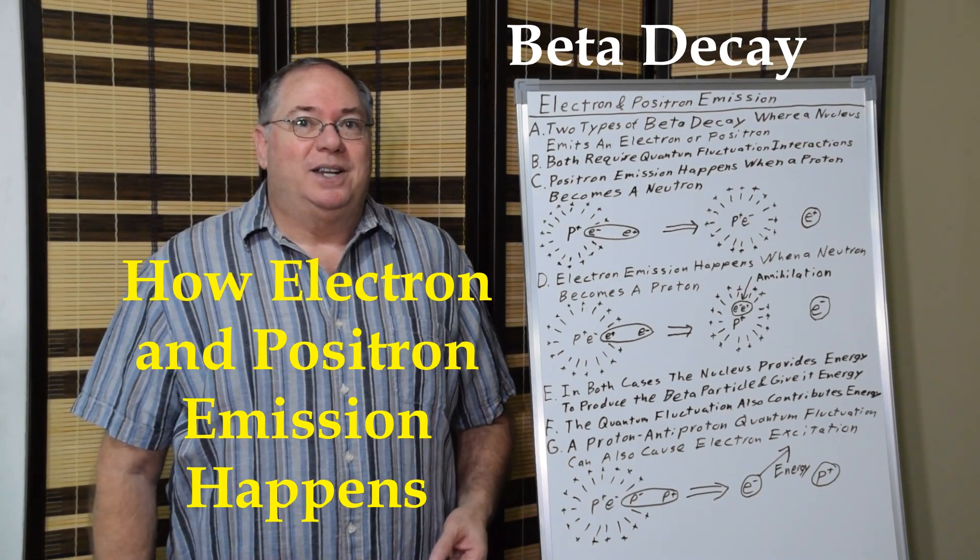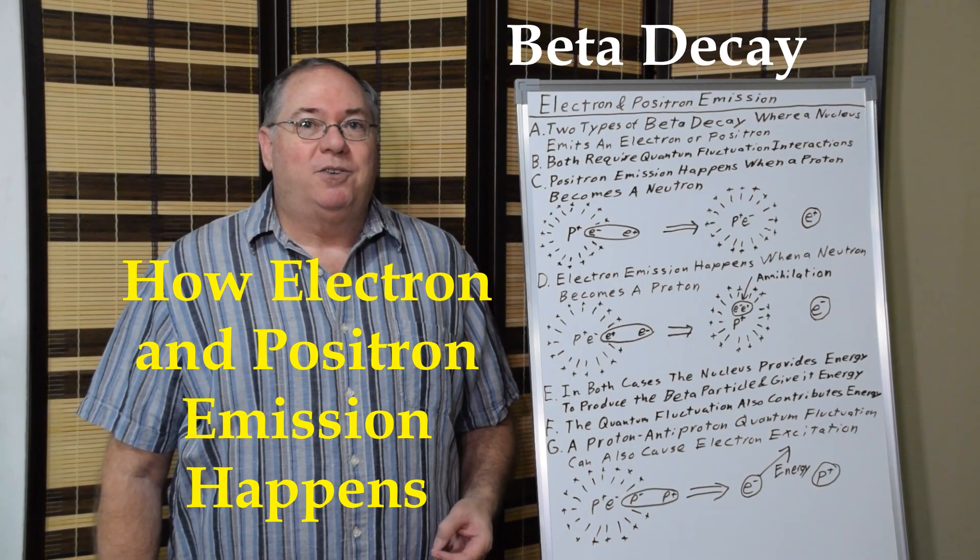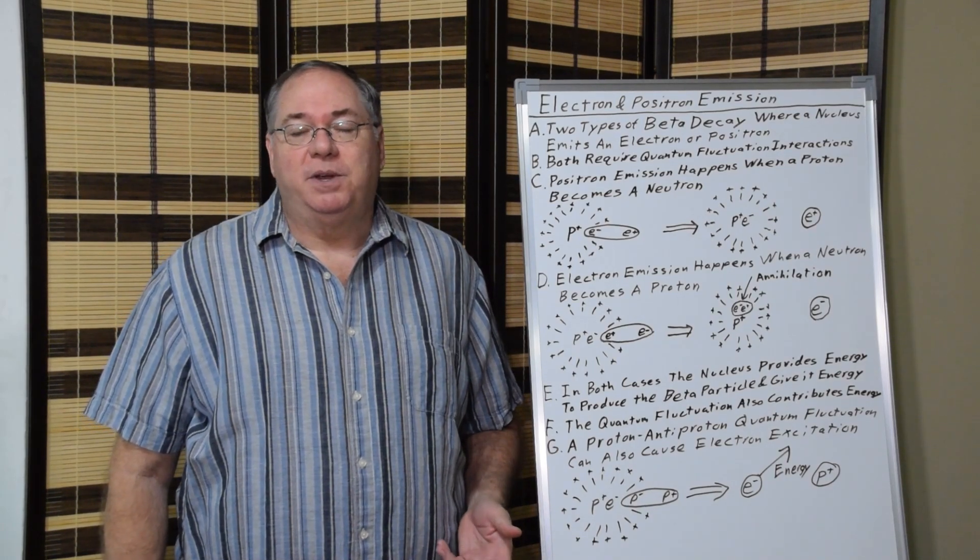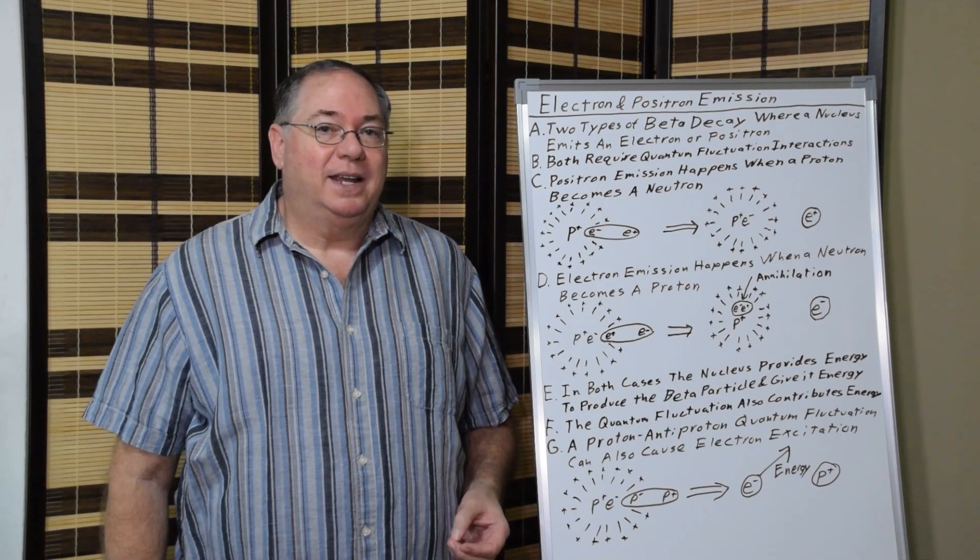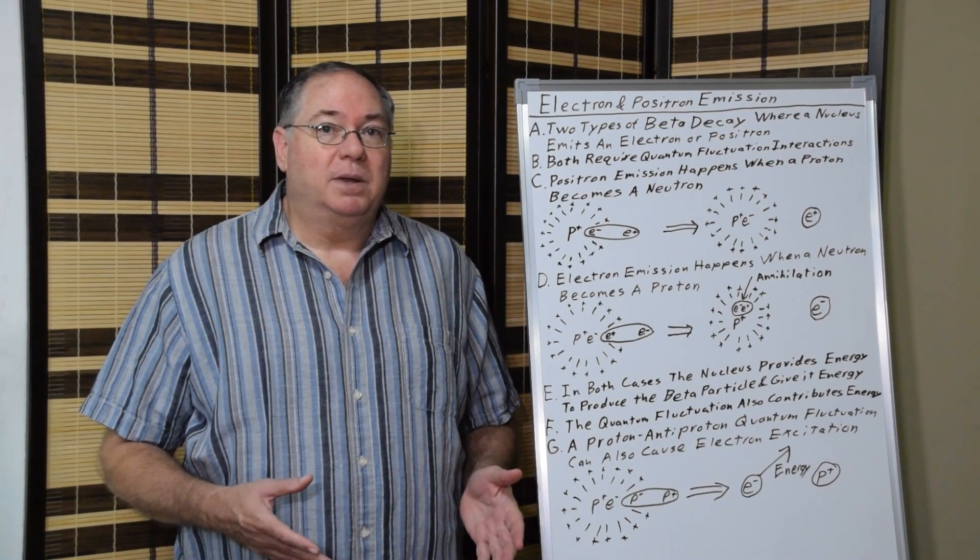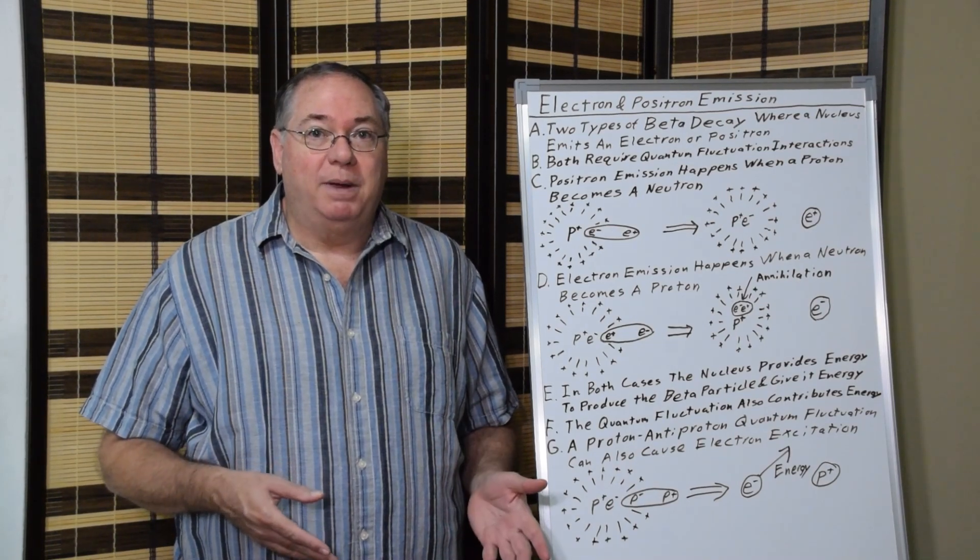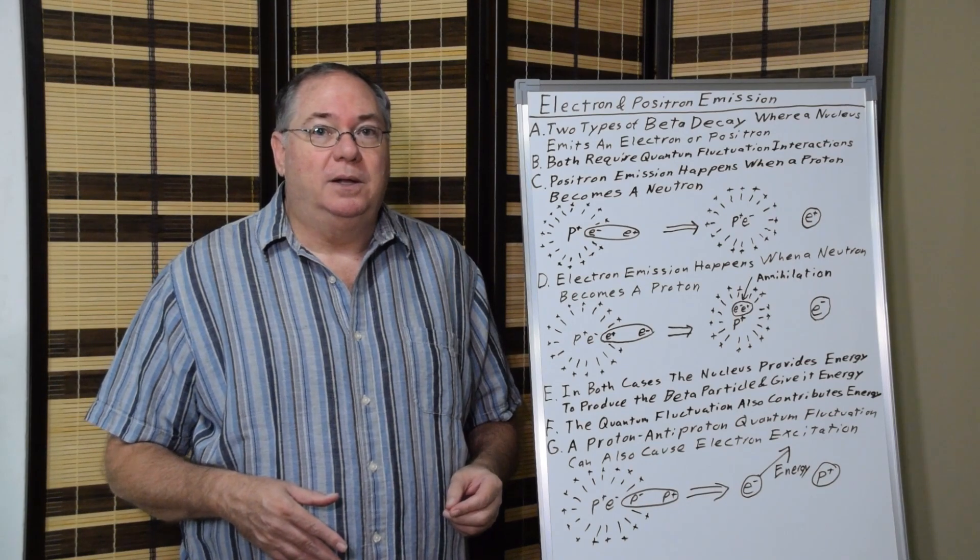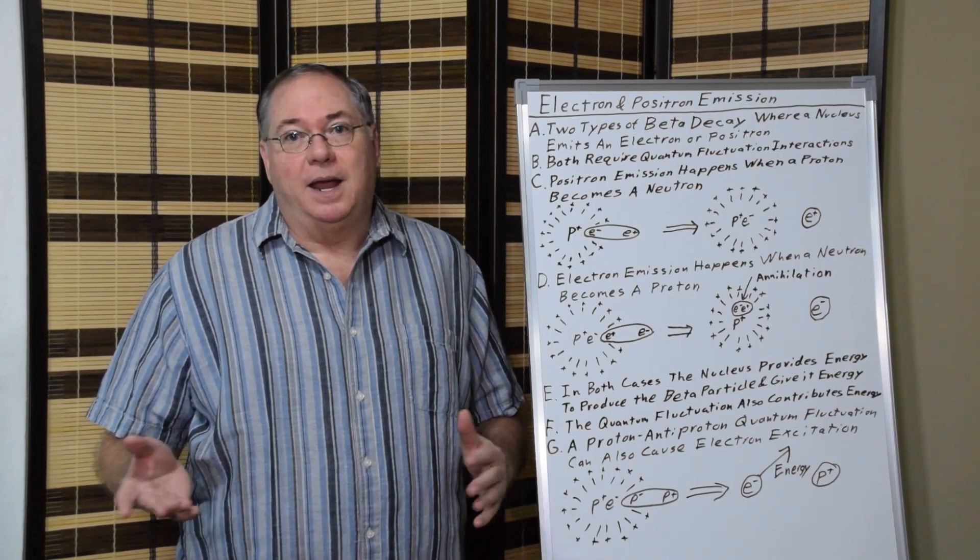Today I'm continuing my series on weak interactions with electron and positron emission. Electron and positron emission are a form of beta decay, which is called beta decay because the electron is called a beta particle, and the positron is a beta particle as well since it's the opposite of an electron.